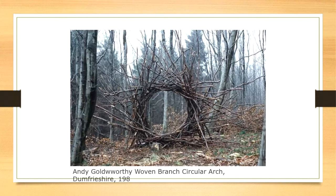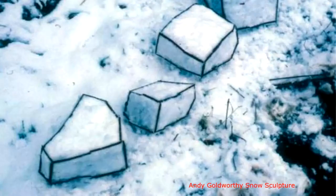Here you see an example of his woven branch circular arch. It's located out in nature on a walking path — something you can actually walk through and experience from all sides and angles. Here's an example of his snow sculpture. I'm showing you this so you can see that sometimes he is manipulating or changing the natural material shape, because he is an artist interacting with those materials and changing the way they look.